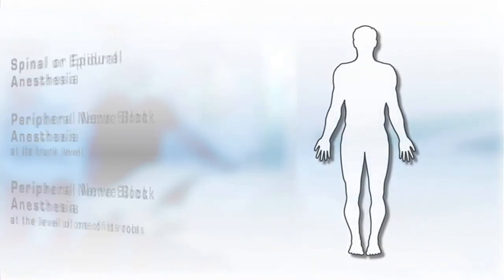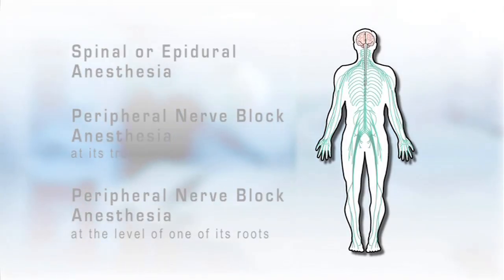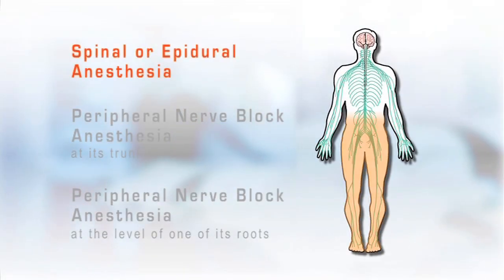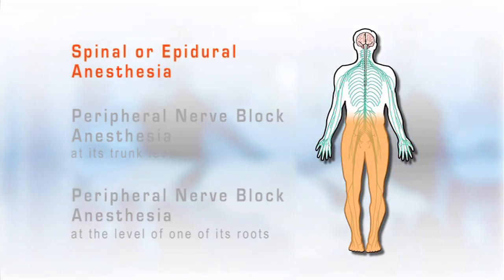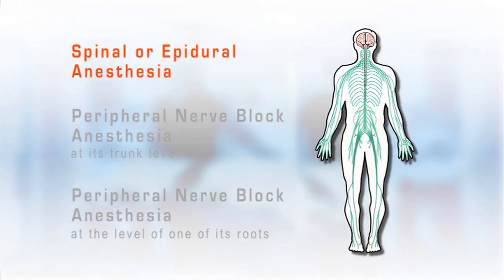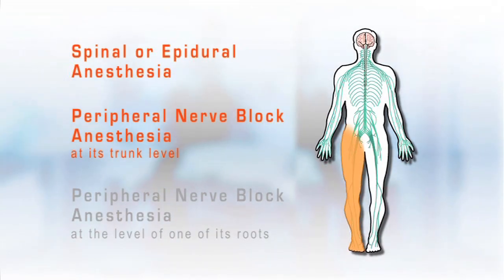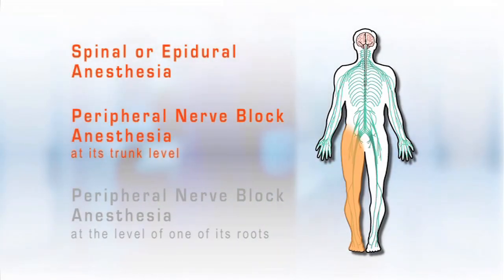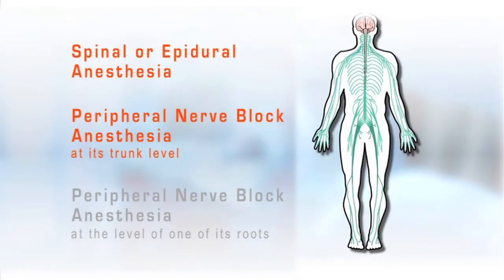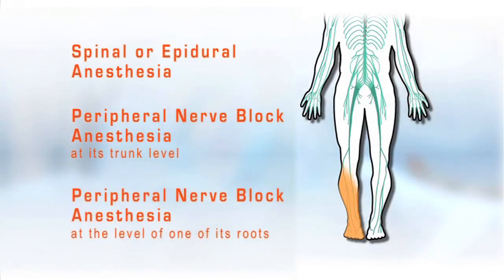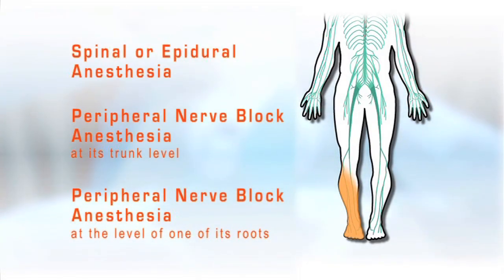There are a variety of regional anaesthesias. Spinal or epidural anaesthesia anaesthesises the lower region of the body. Peripheral nerve block anaesthesia: a nerve can be blocked at its trunk level — for example, to anaesthesise an entire leg — or at the level of one of its roots, to anaesthesise a specific part of the leg.